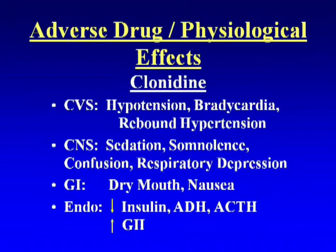Another drug used in spinal administration is clonidine, primarily for neuropathic pain. It can cause adverse effects in the cardiovascular, central nervous, gastrointestinal, and endocrine systems. Its primary effects are hypotension and bradycardia. If administration is suddenly discontinued, you can get rebound hypertension, much like sudden cessation of oral clonidine. Sedation is probably the most common adverse physiological response to clonidine. It can also produce dry mouth, nausea, and endocrine effects.